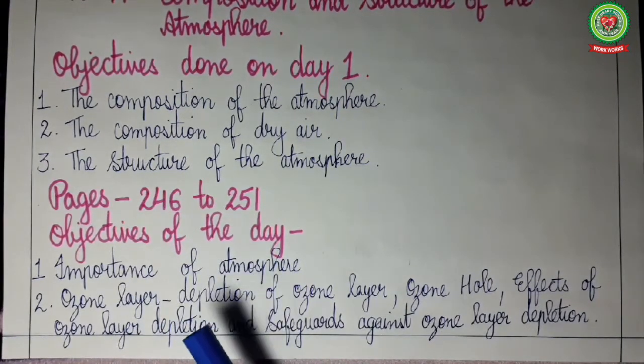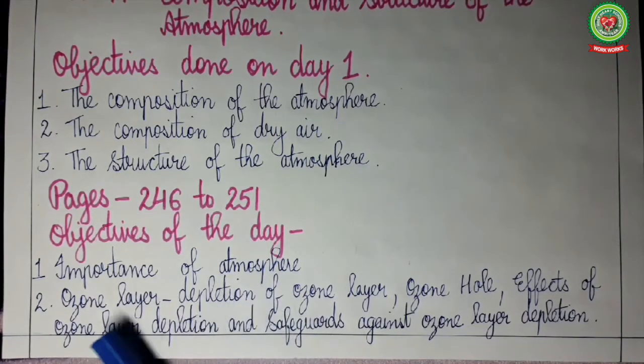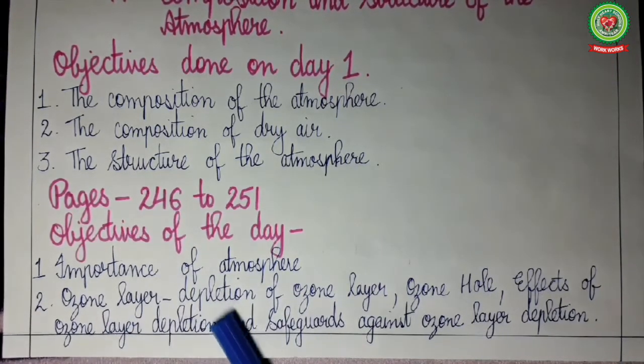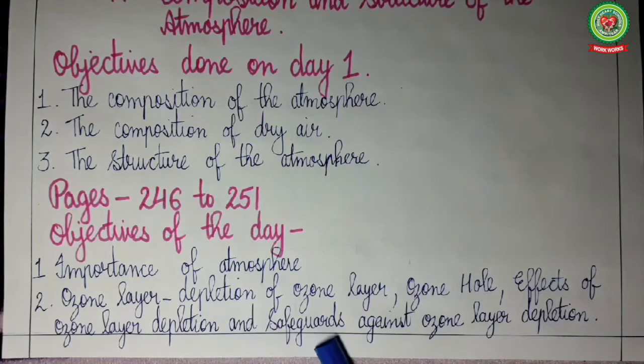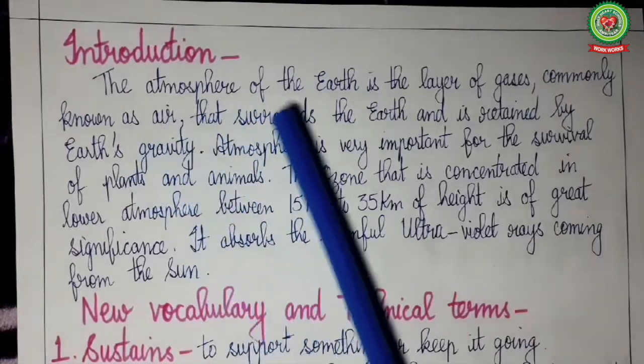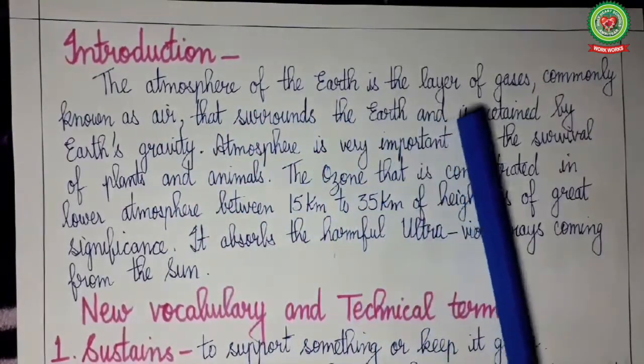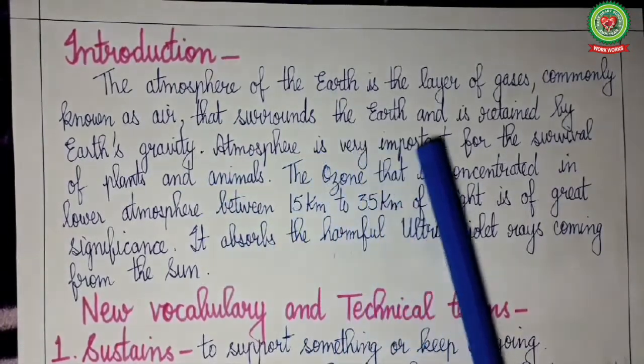Let us see the objectives of today's class. Today we will study about the importance of atmosphere, ozone layer depletion, ozone hole, effects of ozone layer depletion, and the safeguards against ozone layer depletion. The atmosphere of the earth is the layer of gases commonly known as air that surrounds the earth and is retained by earth's gravity.